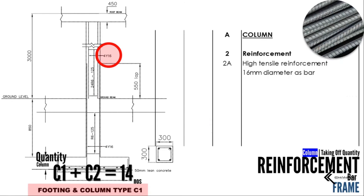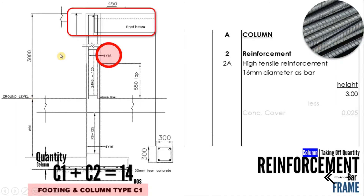Jom kita tengok bagaimana nak kira take off quantity untuk reinforcement bagi high tensile reinforcement 16mm diameter main bar. Berdasarkan contoh C1, kita mulakan dengan height — daripada above crown level hingga top level of roof beam. Kali ini kena hati-hati: kita bukan tolak dengan ketebalan roof beam. Besi kita akan travel masuk sampai ke roof beam, dan kita hanya perlu tolak dengan concrete cover di atas dalam roof beam tu. Daripada 3 meter, tolak concrete cover, kita dapat panjang reinforcement bar Y16 adalah 2.9 meter.